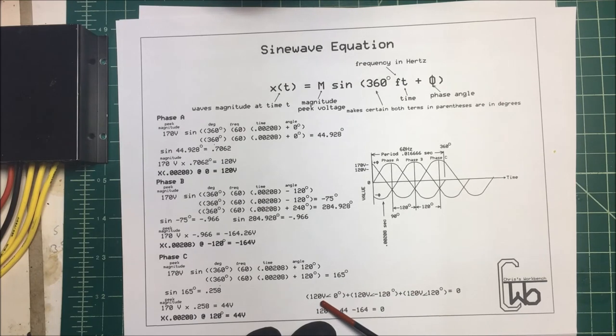Here, this is polar form where you have 120 volts at zero degrees plus 120 volts at minus 120 degrees plus 120 volts at 120 degrees. That comes out to zero if you do it in polar notation.